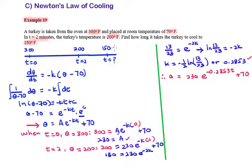Now, when θ is 150, what is T? Substitute θ as 150 equals 230 e raised to power negative 0.2853T plus 70. Minus 70 both sides, 150 minus 70 is equal to 80.